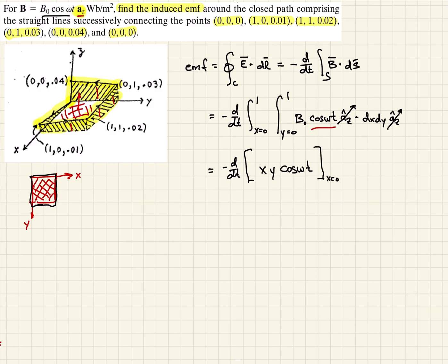When X and Y are zero these go to zero, and when they're one they're just one. So we're left with -d/dt times cos(ωt).